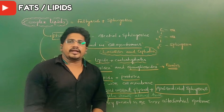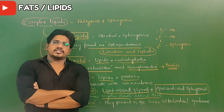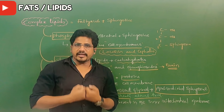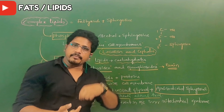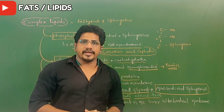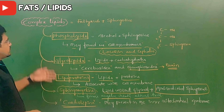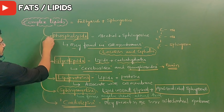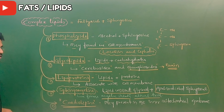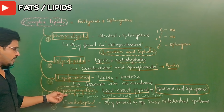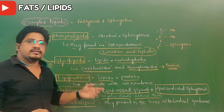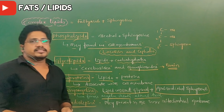Cardiolipids are generally observed in the inner membrane of mitochondria. Inside the cell, the mitochondria — the powerhouse of the cell — generates ATP by respiration. The inner membrane, not the outer membrane, of mitochondria contains cardiolipids. These cardiolipids have a very important role in the generation of ATP. So the five types of complex lipids are: phospholipids, glycolipids, lipoproteins, sphingomyelins, and cardiolipids.